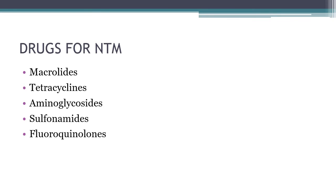Drug groups used for non-tuberculous mycobacterial infections include: macrolides (clarithromycin, azithromycin), tetracyclines (doxycycline, minocycline), aminoglycosides (amikacin, streptomycin), sulfonamides/trimethoprim-sulfamethoxazole, fluoroquinolones (moxifloxacin), and anti-TB drugs such as isoniazid, rifampin, and ethambutol. Note that pyrazinamide cannot be used for non-tuberculous mycobacterial infections.